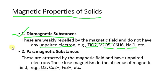The second type is paramagnetic substances. Paramagnetic means there is one or more unpaired electrons, so they are attracted by a magnetic field. They lose their magnetism in the absence of a magnetic field — they have magnetism when the field is present, but once it is removed they lose it. Examples: O₂, Cu²⁺, Fe³⁺, etc.